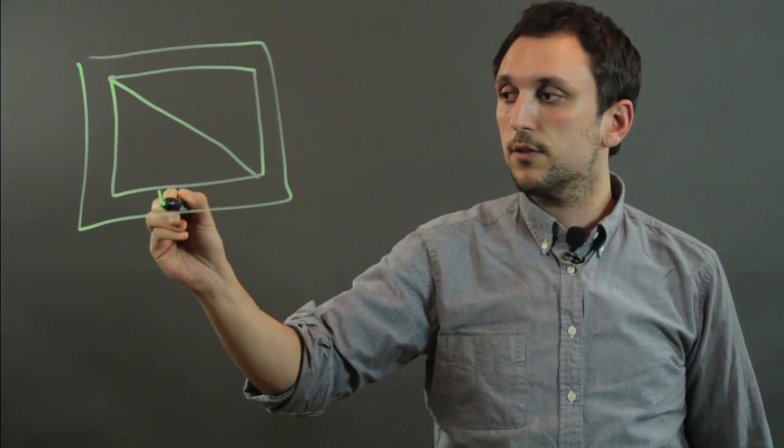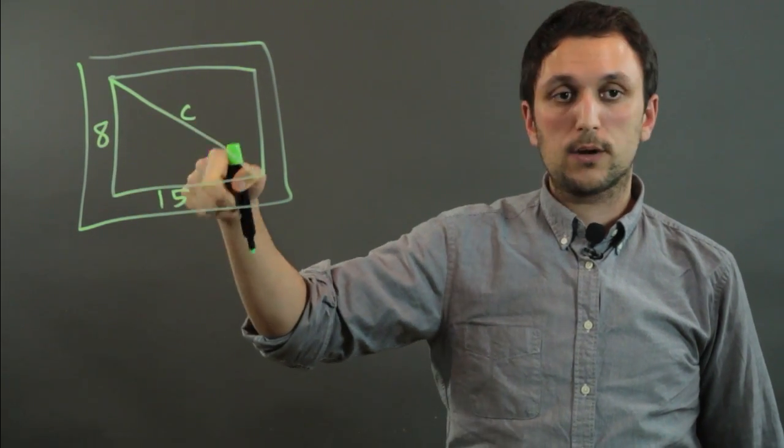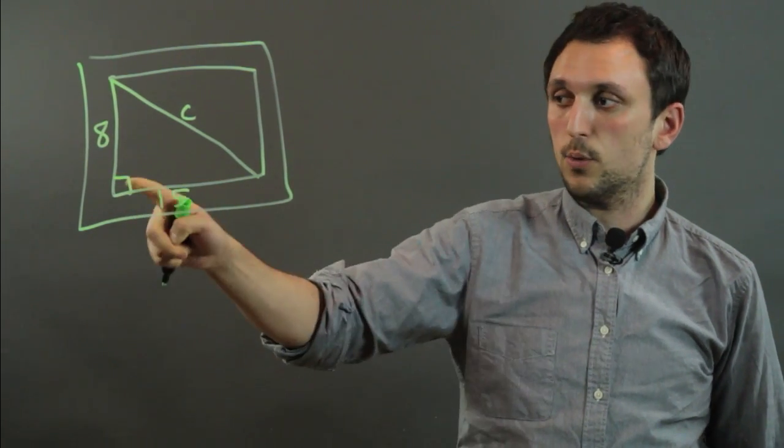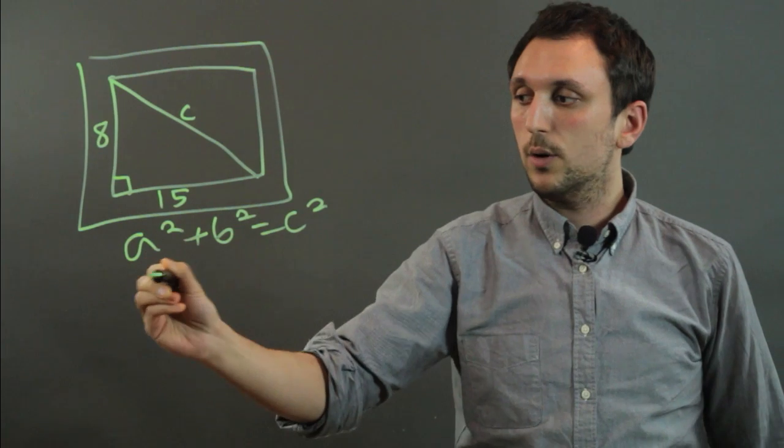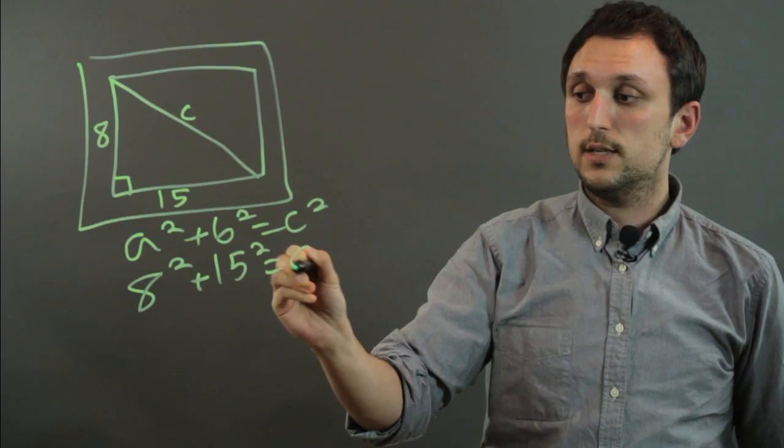Now, if you're trying to measure your own TV, let's say this is 15 and this is 8. Well, you'd use the Pythagorean theorem calling this diagonal C, because it's the hypotenuse opposite the right angle, and we know that A squared plus B squared equals C squared, so 8 squared plus 15 squared equals C squared.